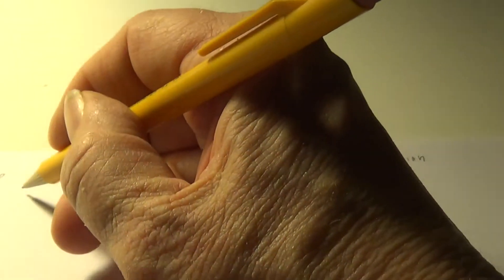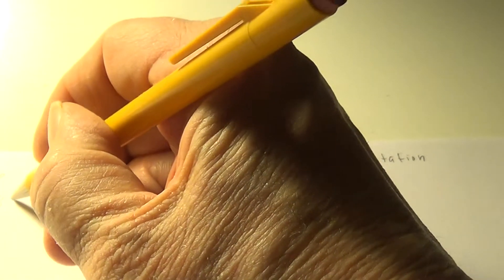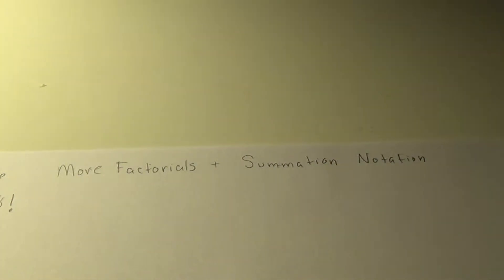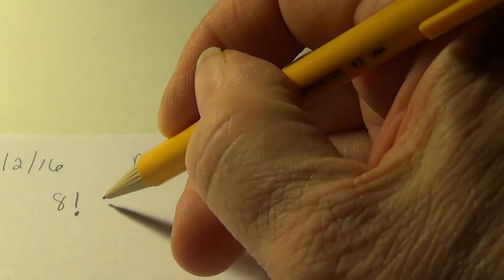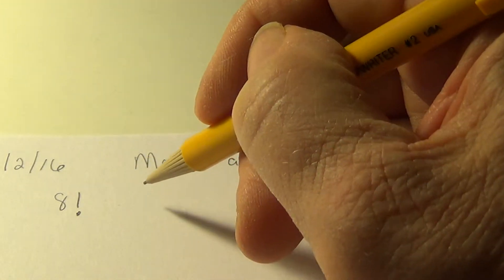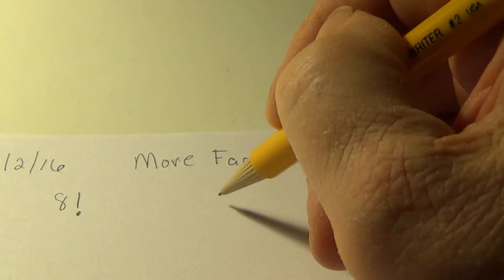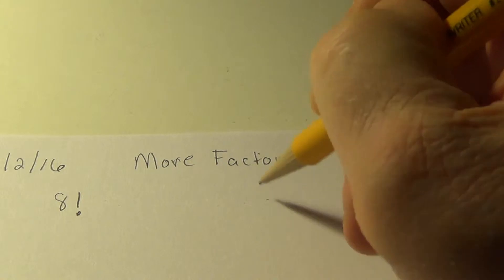Yesterday I introduced or reintroduced to you factorials, which were very exciting. So, say for example, we have 8 factorial, and let's bring it a little closer. 8 factorial, and we learned that that would be 8 times 7 times 6 times 5 times 4 times 3 times 2 times 1.